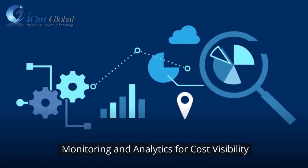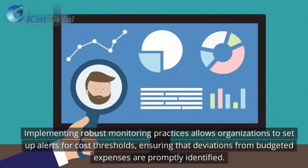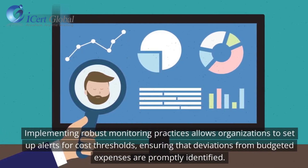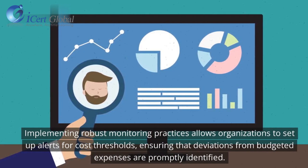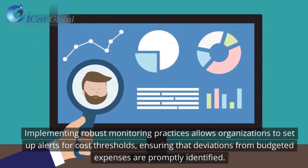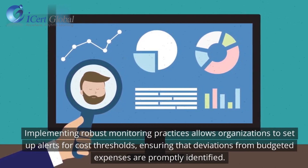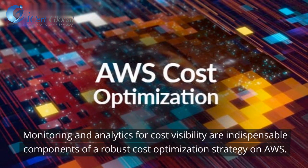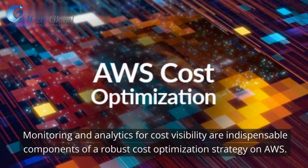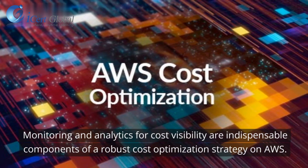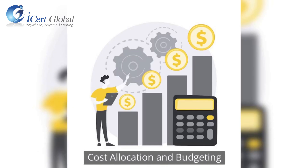Implementing robust monitoring practices allows organizations to set up alerts for cost thresholds, ensuring that deviations from budgeted expenses are promptly identified. Monitoring and analytics for cost visibility are indispensable components of a robust cost optimization strategy on AWS.